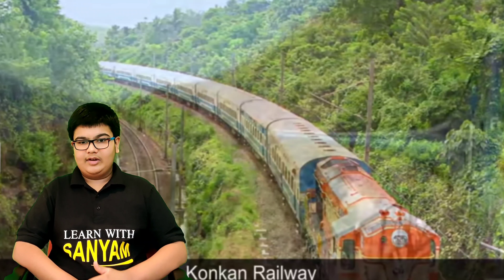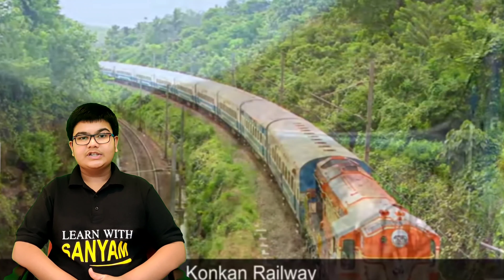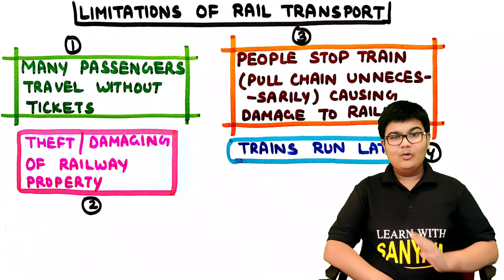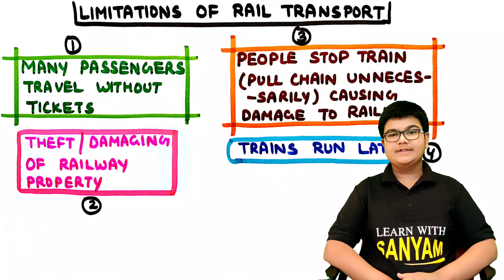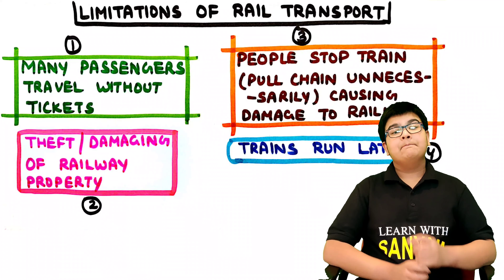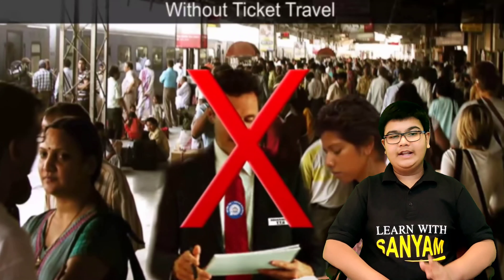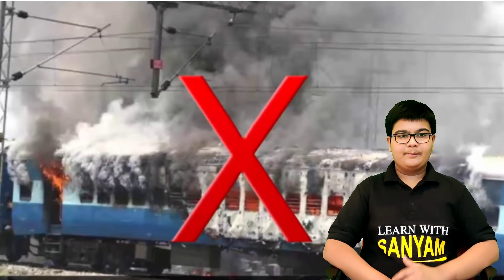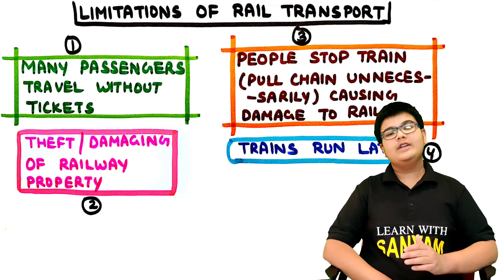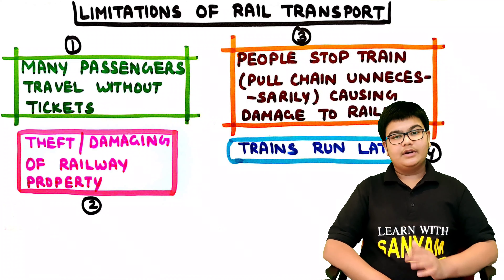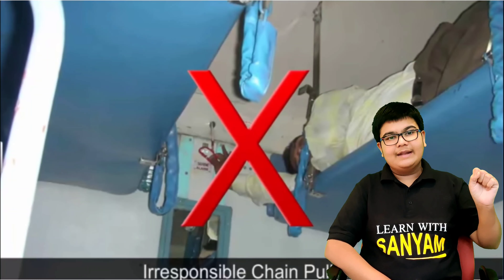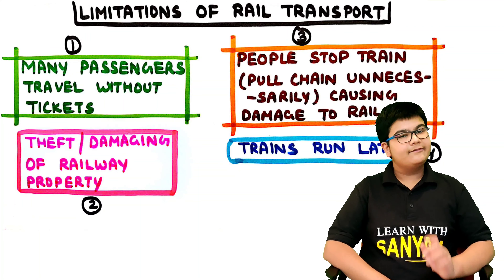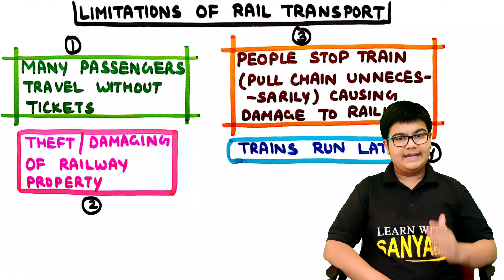Konkan Railway has been developed along India's west coast and has helped in the economic development of that area. Now let's see a few limitations of rail transport. First, many passengers travel without a ticket. Second, theft or damaging of railway property is another cause of damage to rail transport. Third, people stop the train by pulling the chain unnecessarily, causing damage to the railway. Fourth, trains run late quite often.